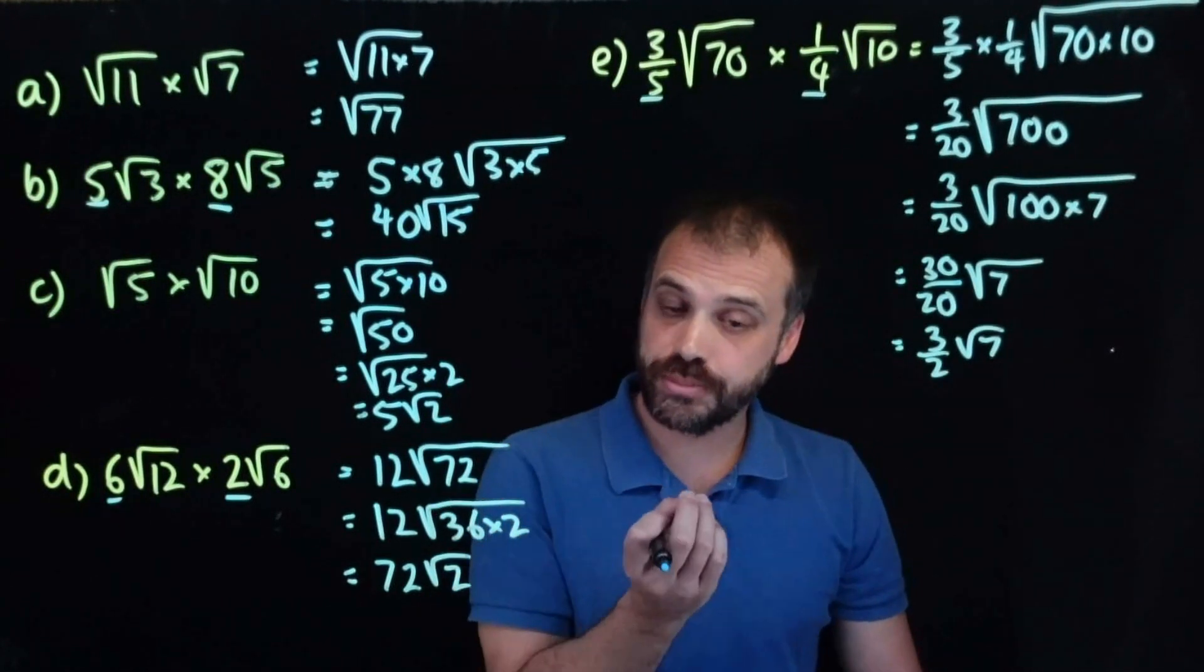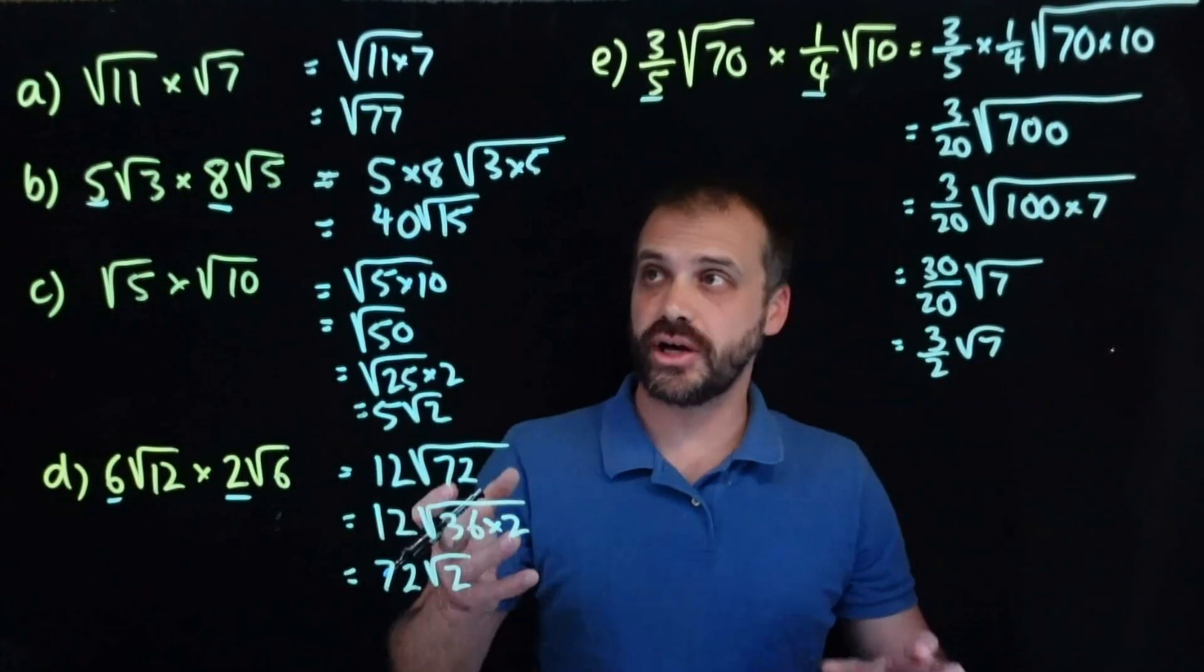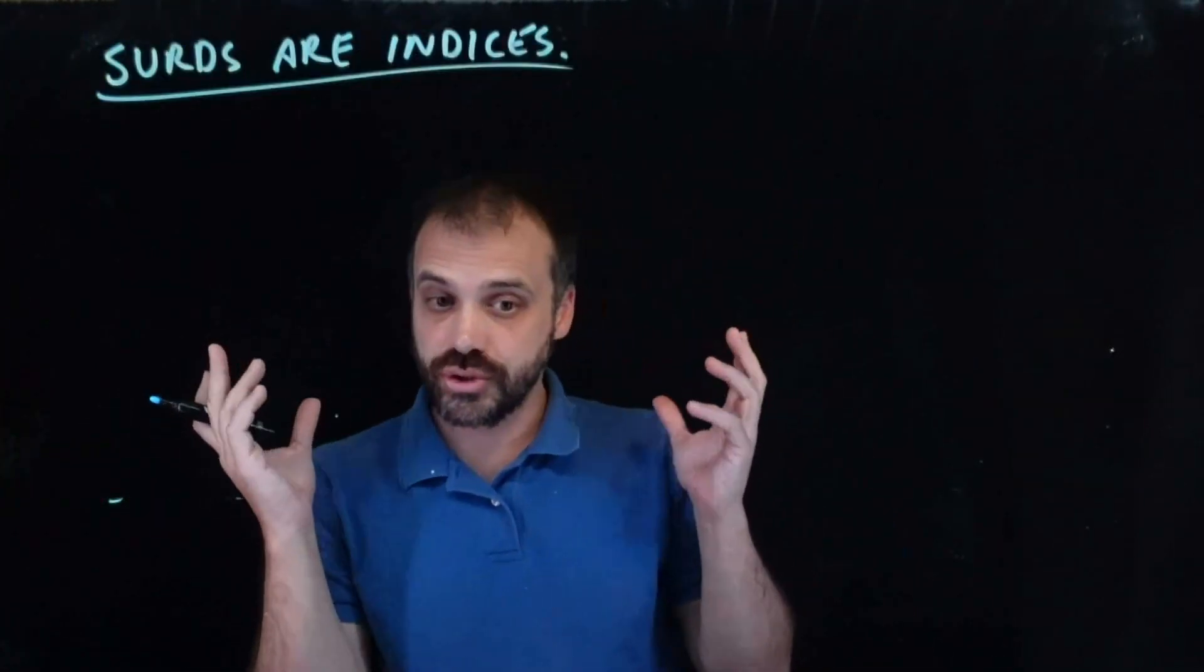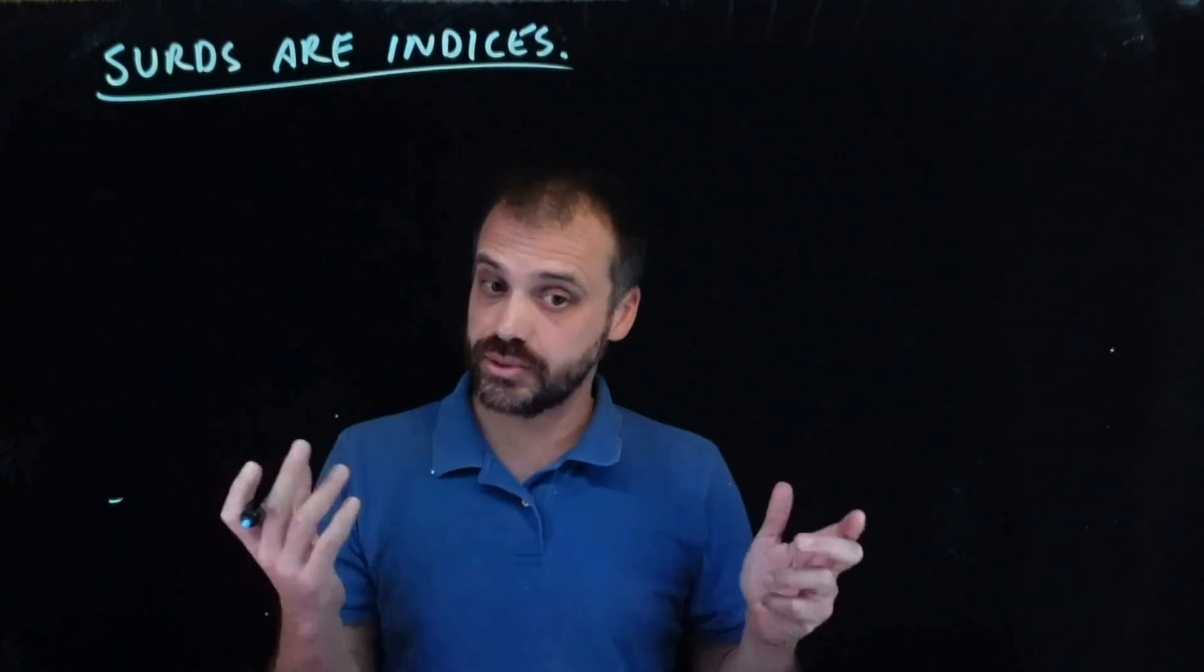Now, of course, because you're a curious person, you're wondering, okay great, I can see what the rule is I guess, but why does it work? And the answer is always, surds are indices, and that's why it works.